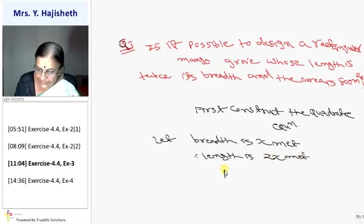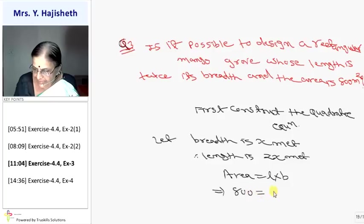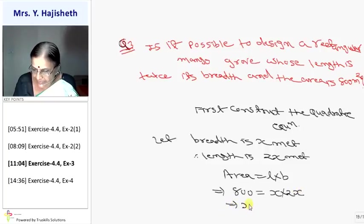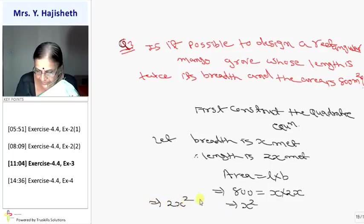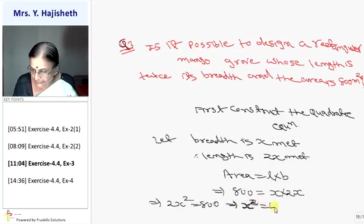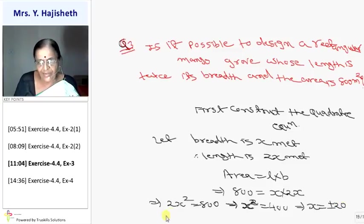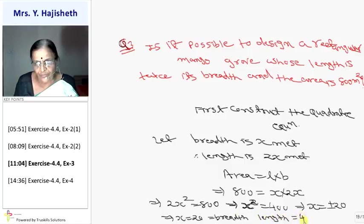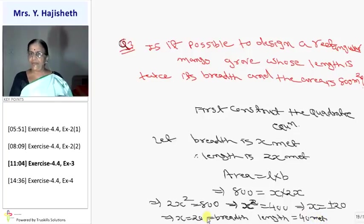Area = L × B = 2x × x = 2x² = 800. So x² = 400, therefore x = ±20. But length cannot be negative, so x = 20. The breadth is 20 m and the length is 2×20 = 40 m. Yes, it is possible — the breadth is 20 meters and the length is 40 meters.